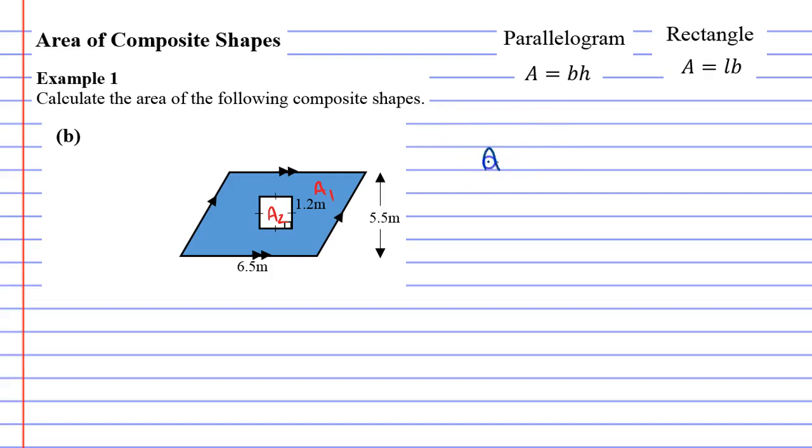We'll start with the parallelogram, A1, which is base times height. The base is 6.5 and the height is 5.5. 6.5 times 5.5 equals 35.75 metres squared.